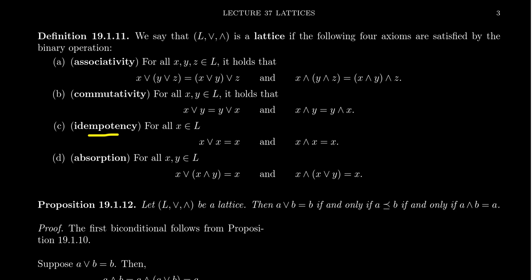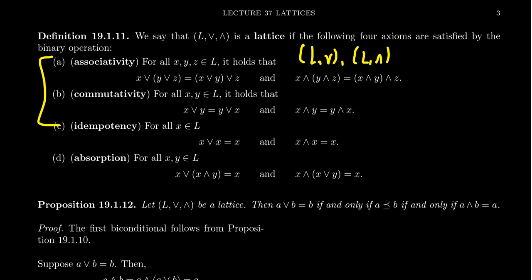Thirdly, we require that every element is idempotent with respect to both operations. So for any element x, we require that x join x is equal to x, and we also require that x meet x is equal to x. If we stop there, what we're saying is that the set L with join is a semi-lattice, and L with meet is also a semi-lattice.